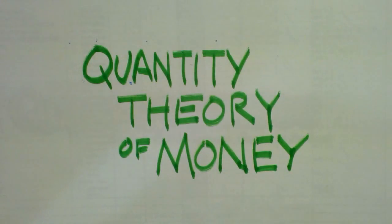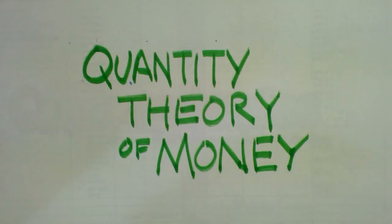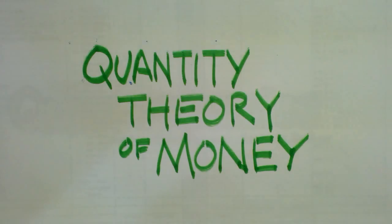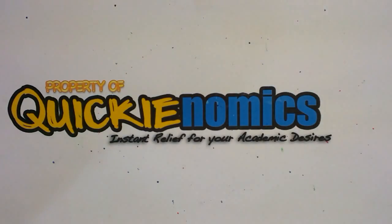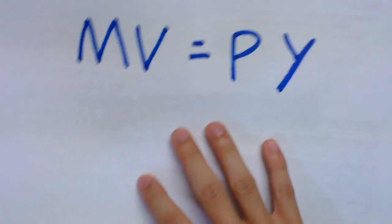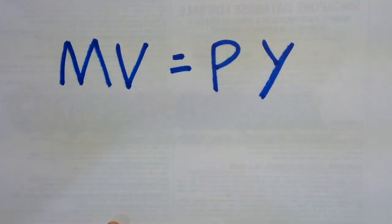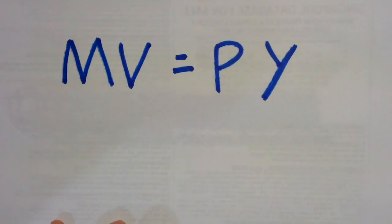Good morning. Let's spend a little bit of time talking about the Quantity Theory of Money. This is a classical theory belonging to the macroeconomics family — a very simple relationship of four variables. Today we're going to understand exactly what this equation is trying to tell us. And the equation we're going to look at is this — just four very simple variables, nothing too complicated.